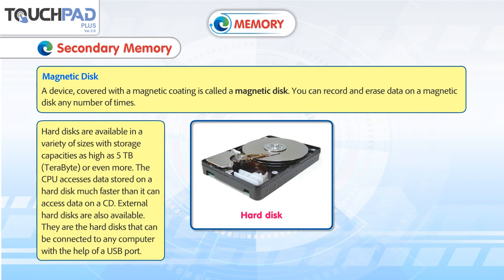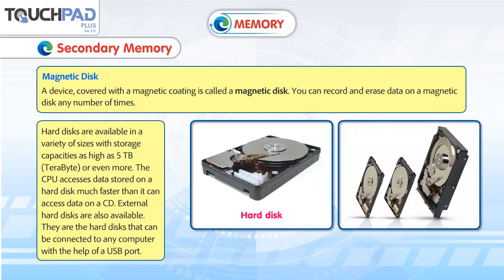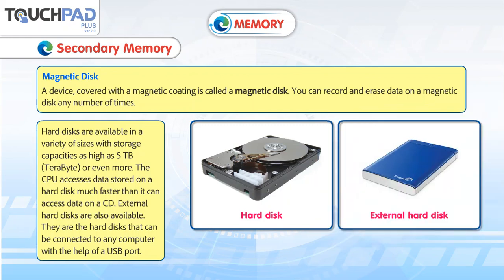The most important function of the hard disk is to store program files and data files. Hard disks are available in a variety of sizes with storage capacities as high as 5 terabytes or even more. The CPU accesses data stored on a hard disk much faster than it can access data on a CD. External hard disks are also available and can be connected to any computer using a USB port.